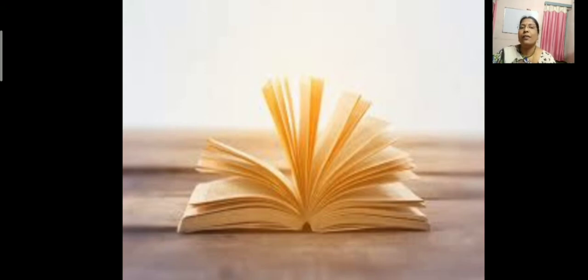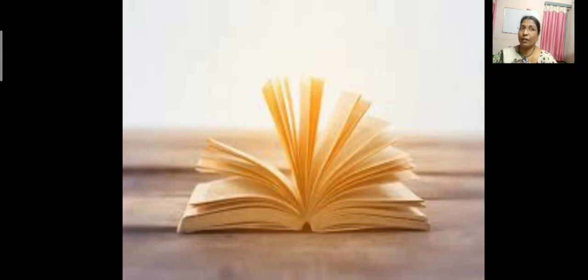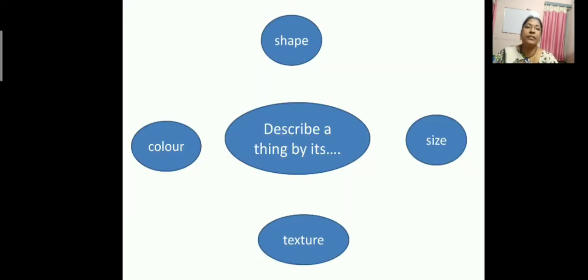By its shape. So, how is it? Whether it is rectangle or square shape, that you will describe. And you will say that the book is very huge. And how it is? It is soft or rough, you have to say. Then you will also tell the color of the book. So now we describe the book by different things. Anything we describe by its shape, color, size, and texture.